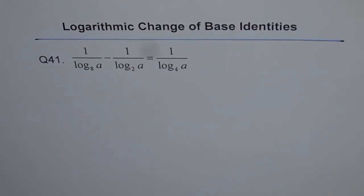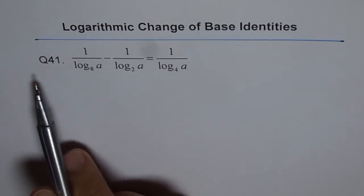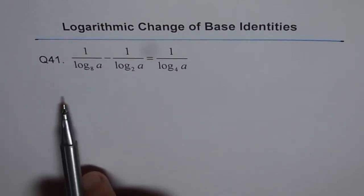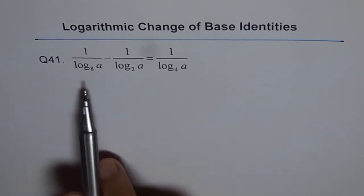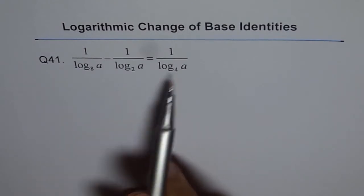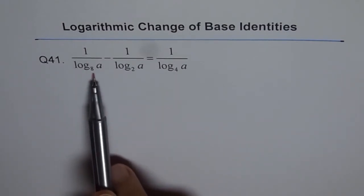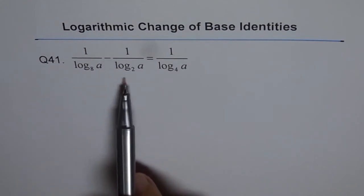Logarithmic change of base identities. As we discussed in question 40, the previous one, we are going to apply the change of base formula to prove this identity. It is 1 over log base 8 of a minus 1 over log base 2 of a.